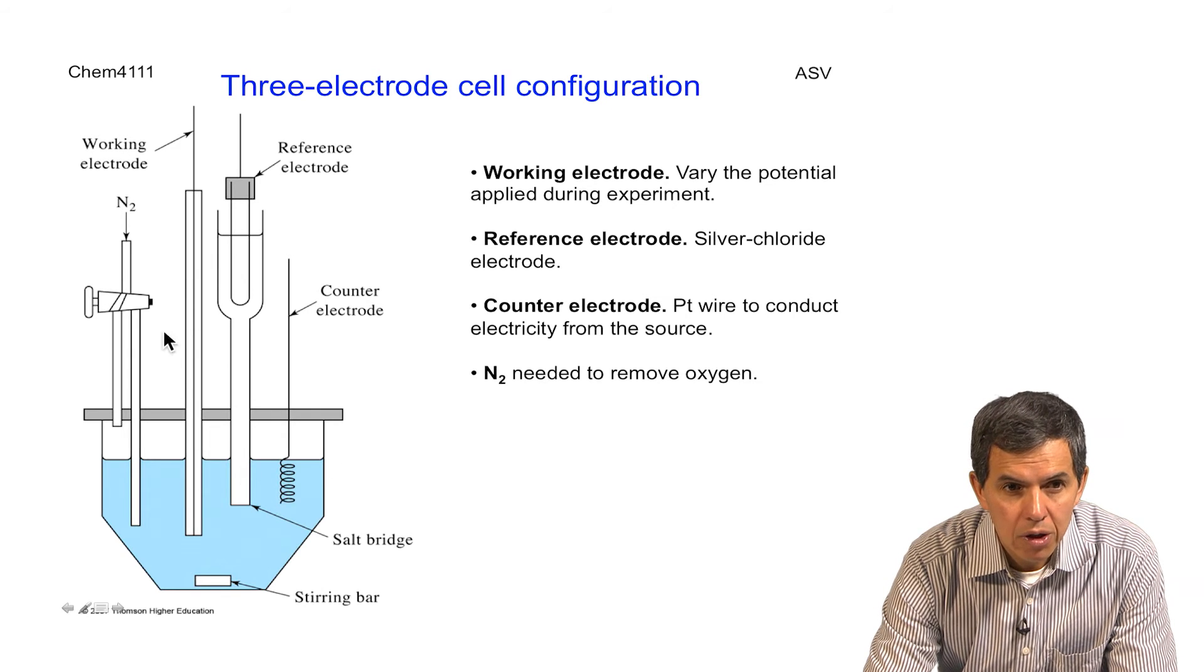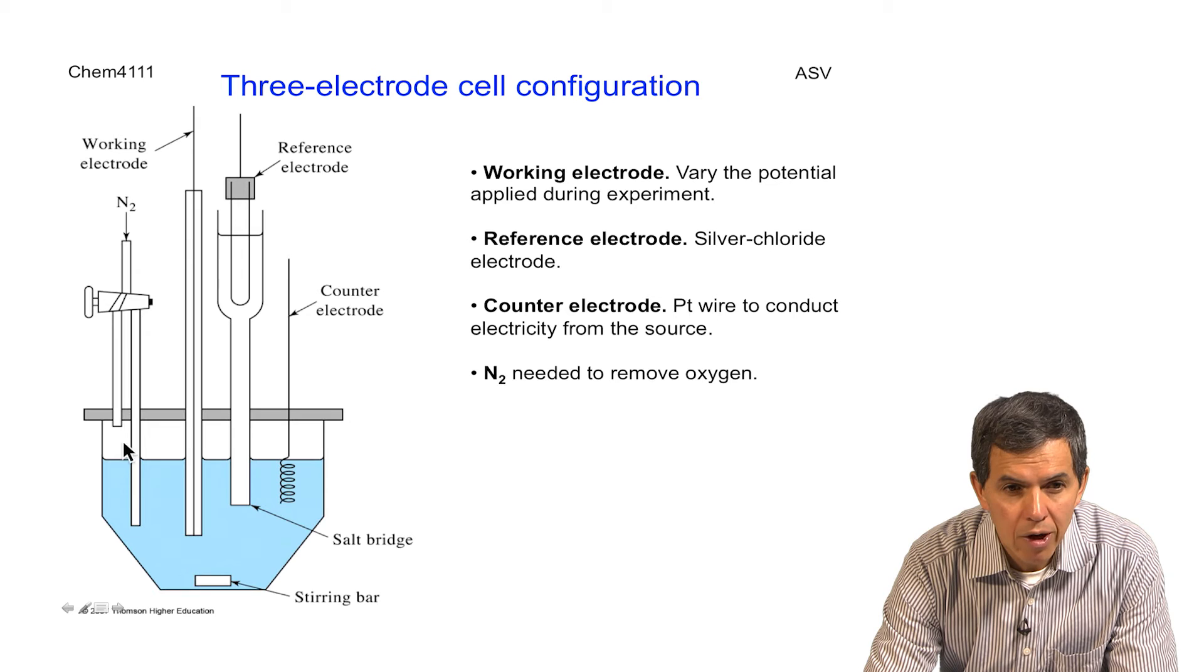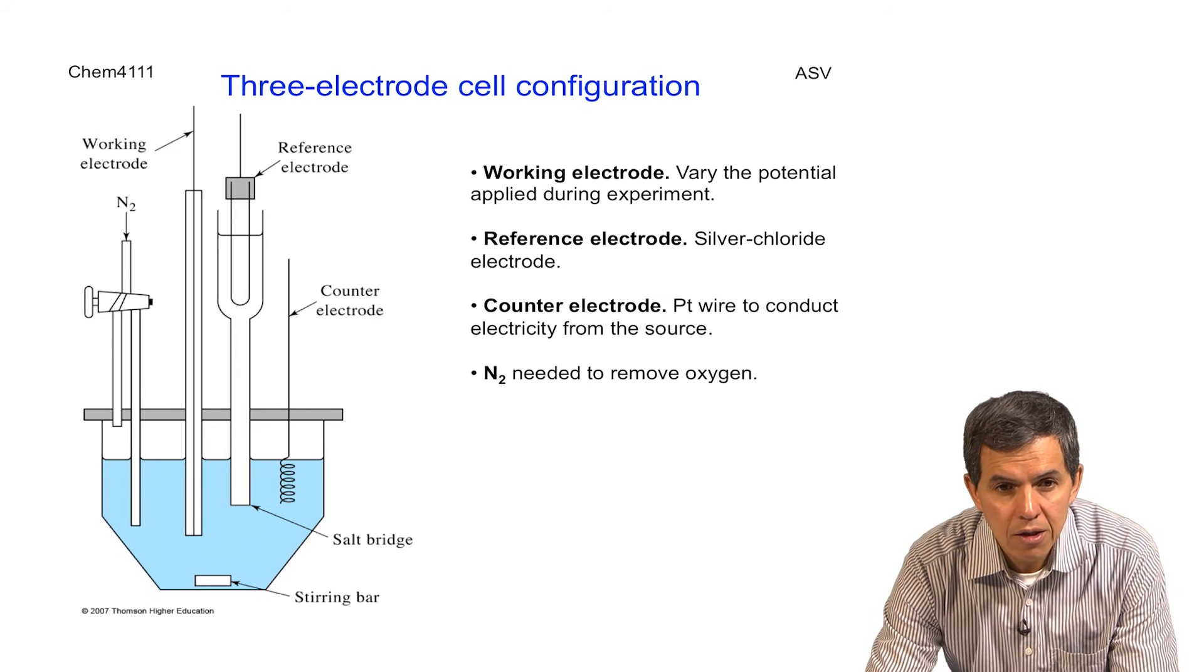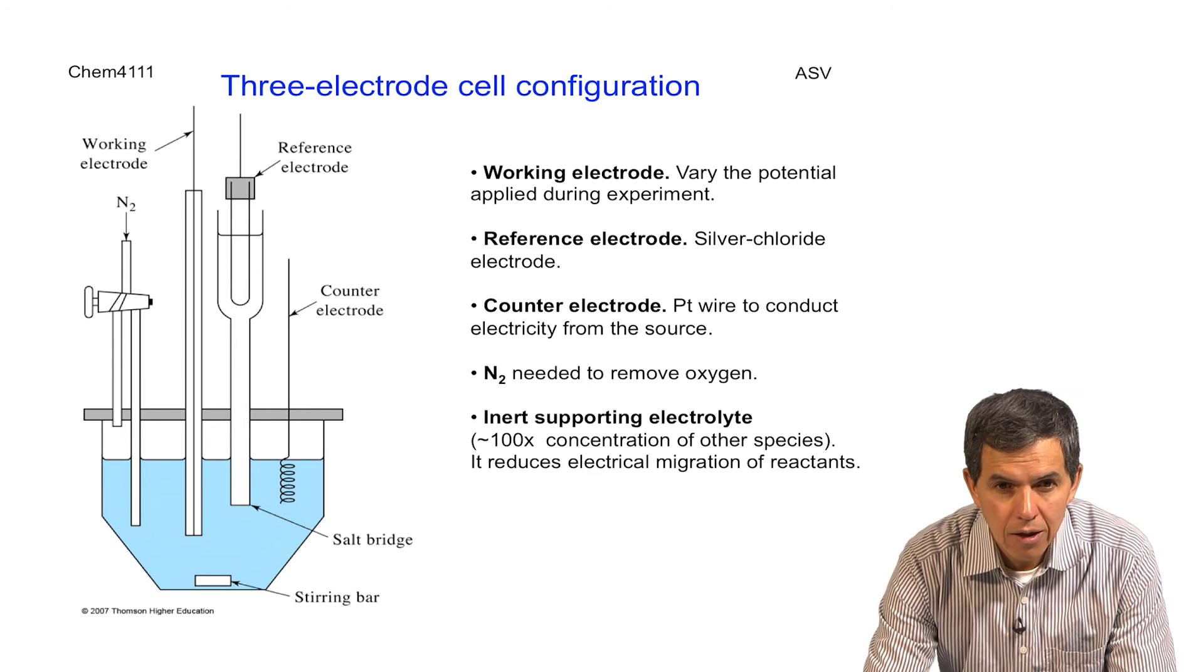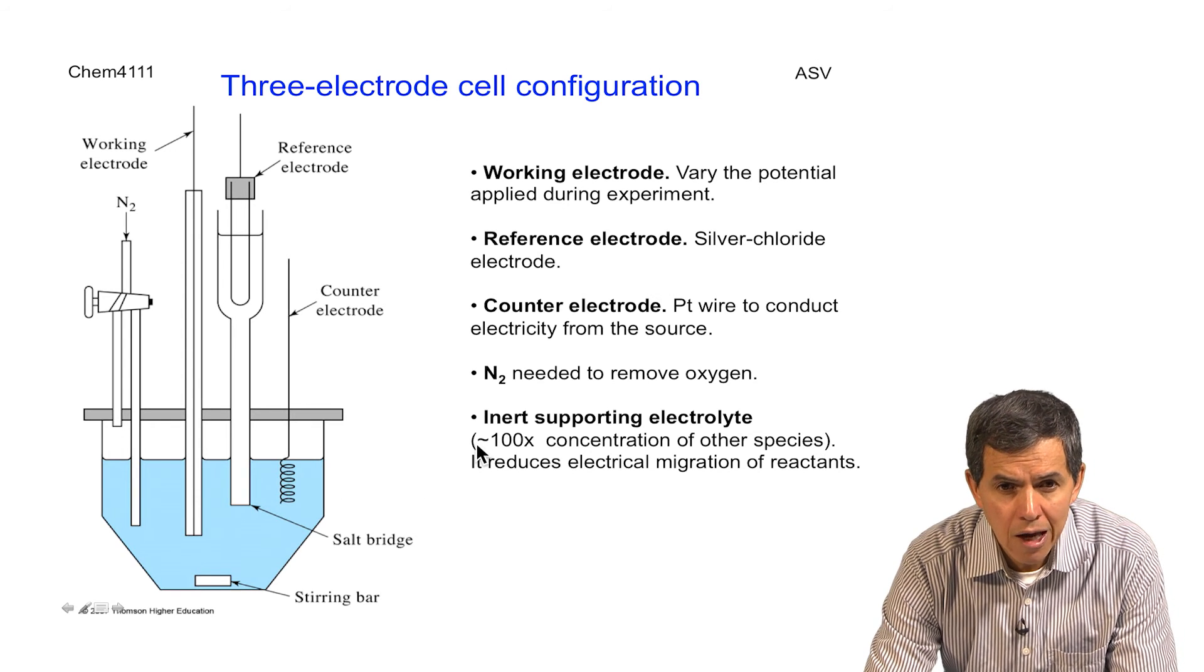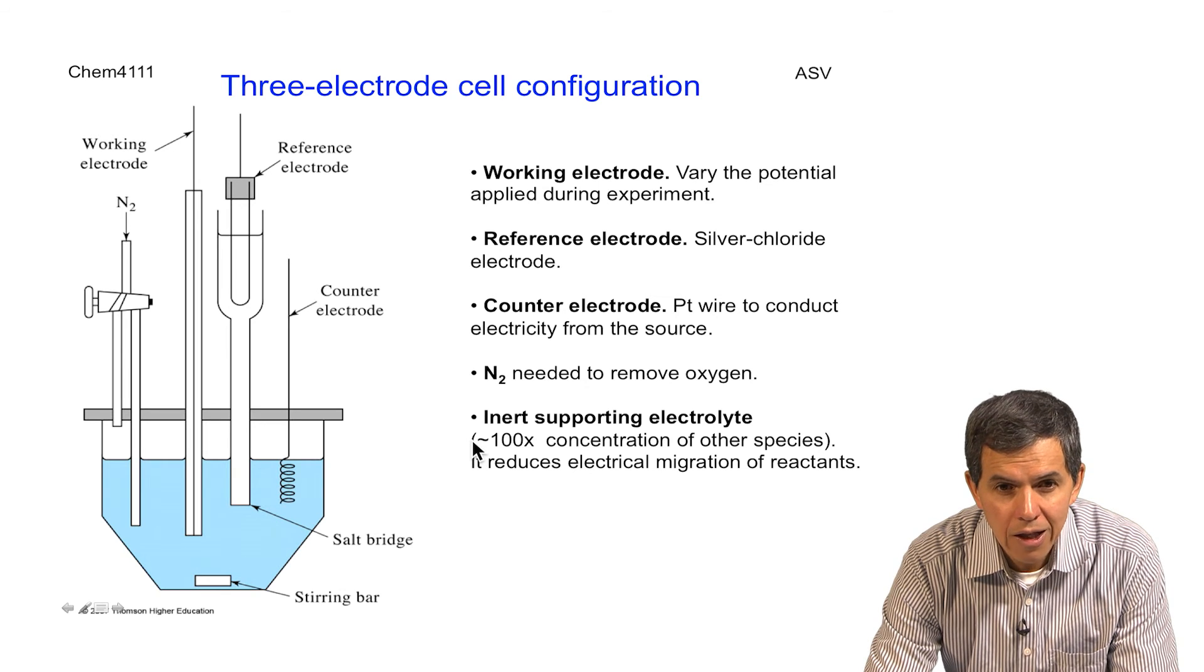We also have nitrogen. Nitrogen is important to be released to create an inert atmosphere, because if nitrogen is not delivered, oxygen will be present and that will cause interference with the analysis that is being carried out. That is because the oxidation and reduction potential usually have a very narrow range, which will interfere with the analysis. Another component of this system is an inert supporting electrolyte, which is a salt that does not experience oxidation or reduction, which is at high concentration relative to other species, and prevents the migration of reactants due to the electric field close to the surface of the electrode, in this case, the working electrode.